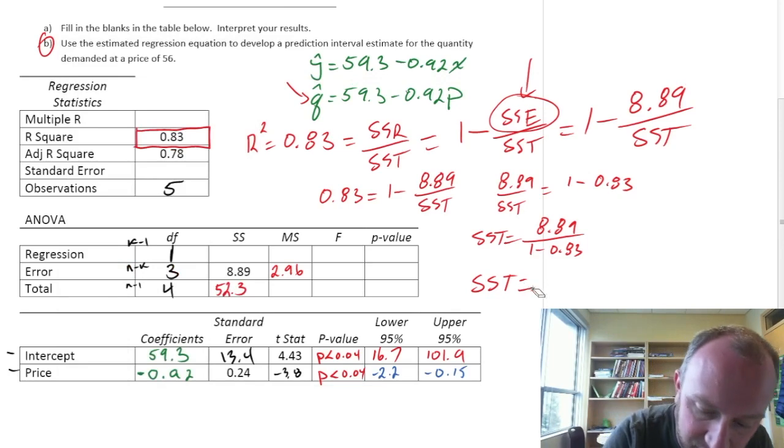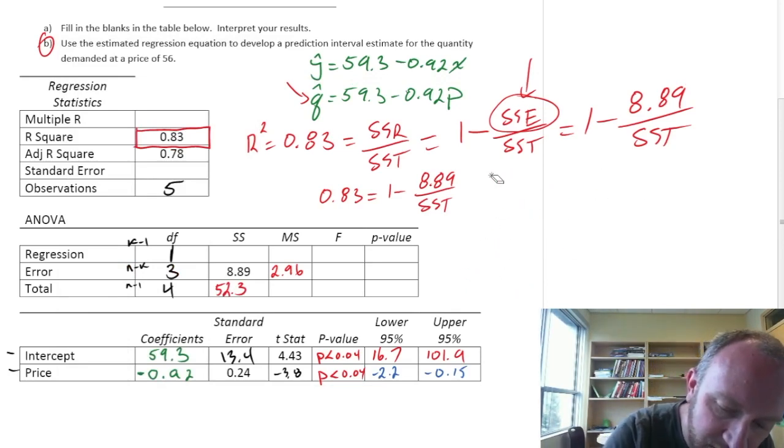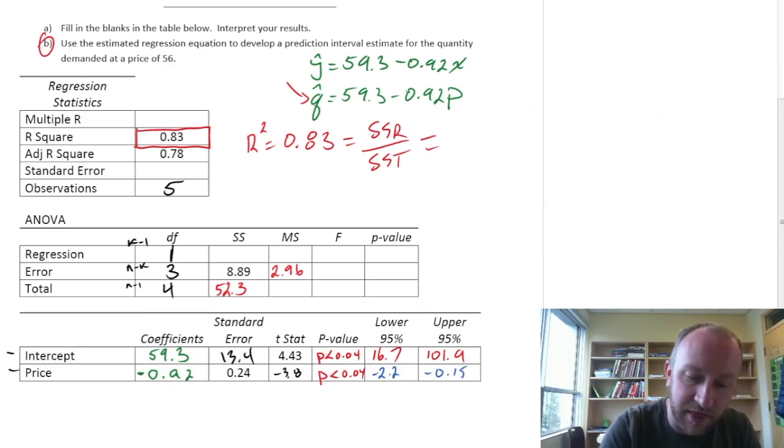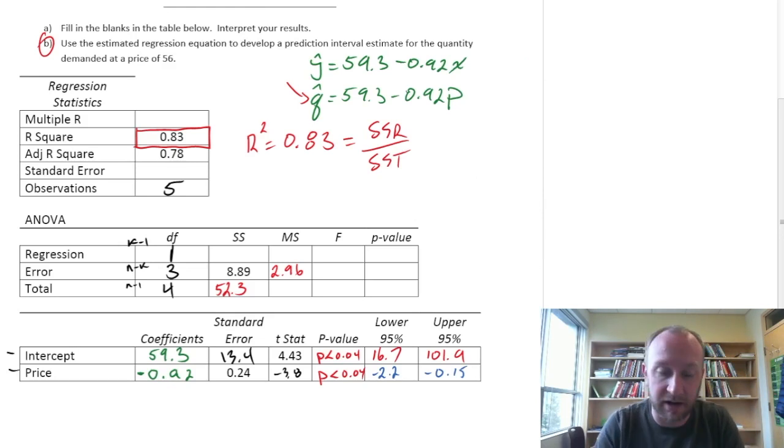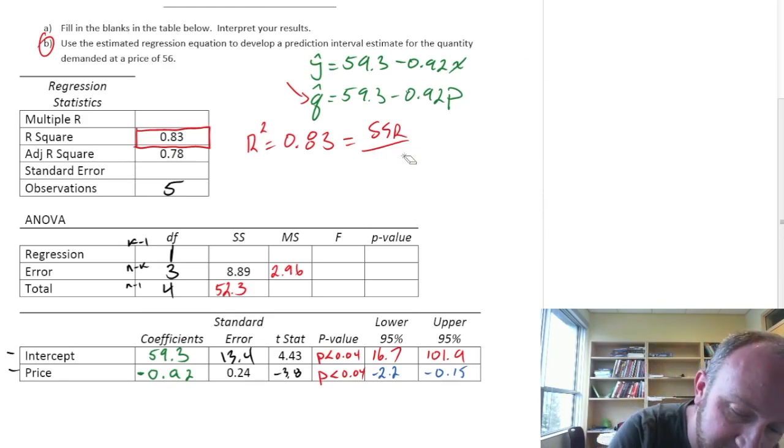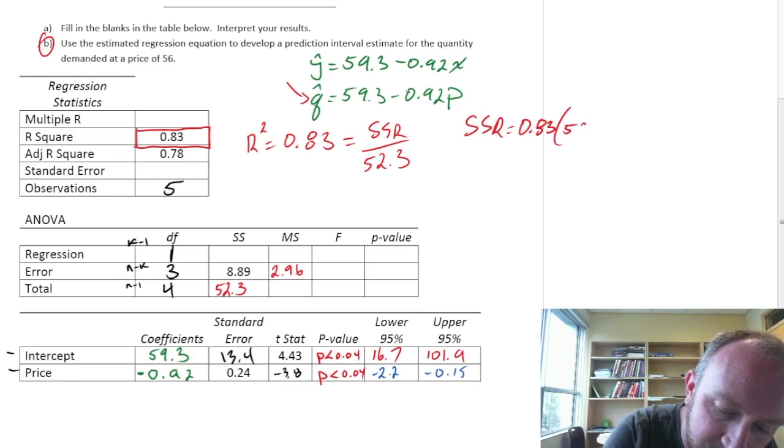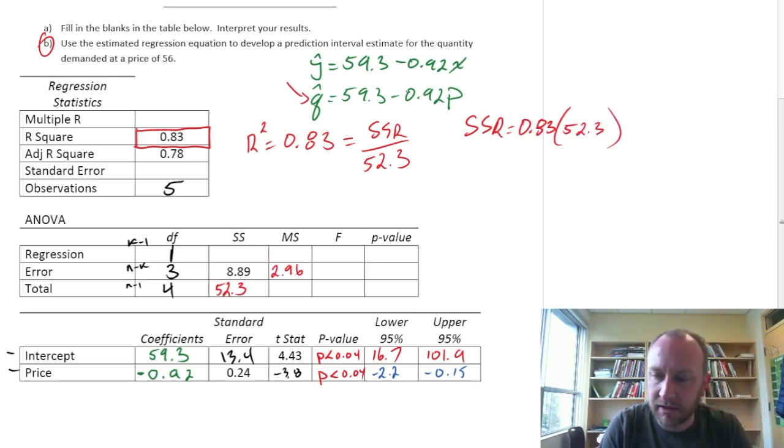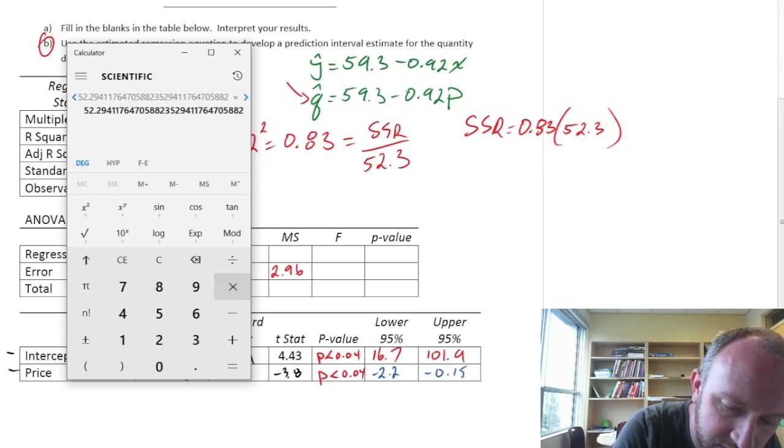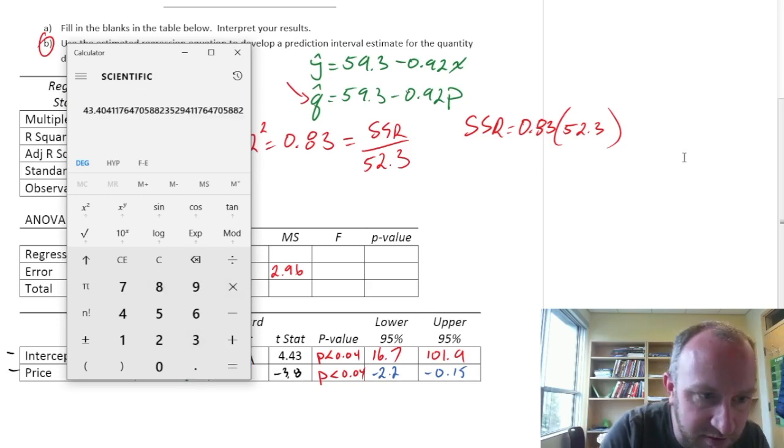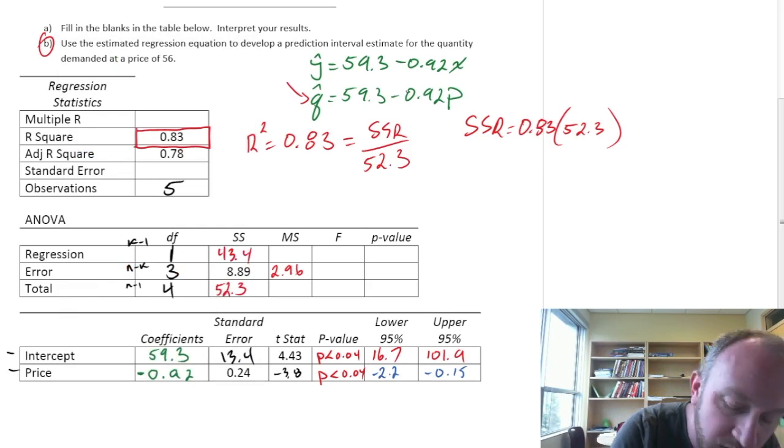Now, well we've got a little bit more to work with. So now we can figure out SSR, either using this same calculation right here that we just used for SSE. So SST now we know is 52.3. So we can solve for that. SSR is going to be 0.83 times 52.3. So here, 52 times 0.83. So 43.4.